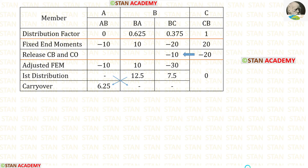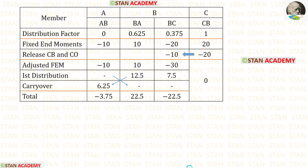We cannot continue further because we can only make distributions at joint B, and joint B now has no remaining values. So we cannot make any more distributions. Adding the values, we get the totals: minus 3.75 for the first column, 22.5 for the second column, and minus 22.5 for the third column.